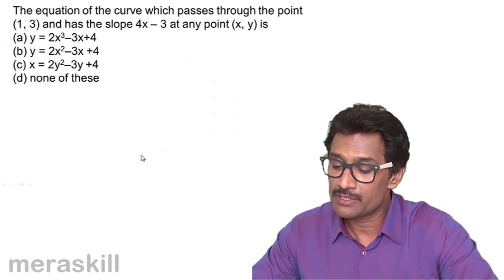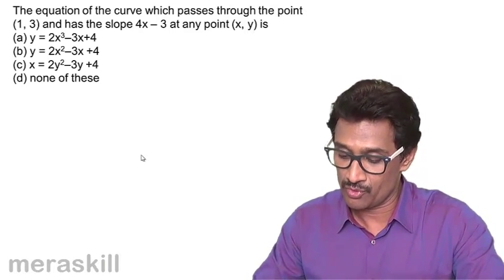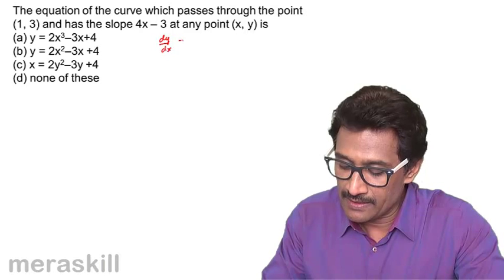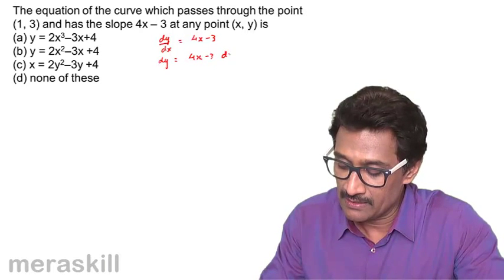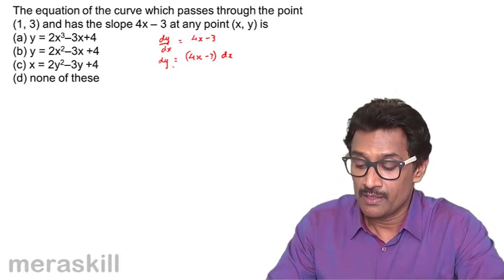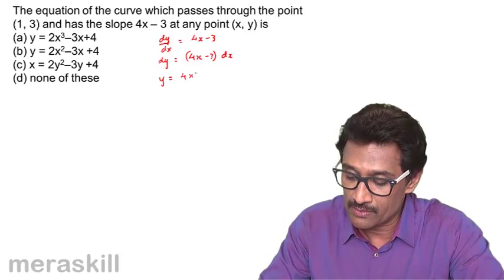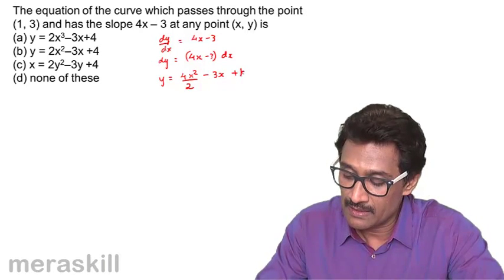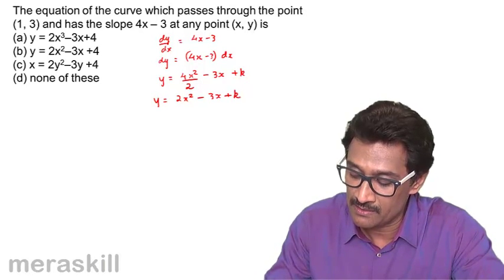The equation of the curve passes through a point and has slope 4x minus 3 at any point x, y. So dy/dx is equal to 4x minus 3, meaning dy is equal to (4x minus 3)dx. Integrating both sides, we get y equal to 4x squared by 2 minus 3x plus k. So y is equal to 2x squared minus 3x plus k.